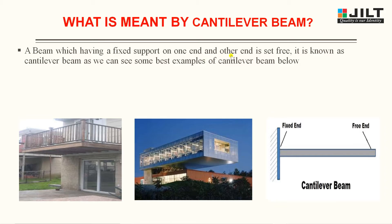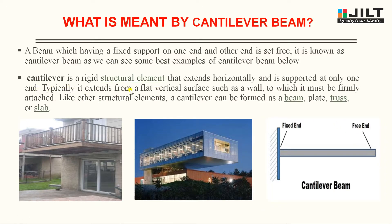A beam having a fixed support on one end and the other end set free is known as a cantilever beam. Some best examples are a balcony or terrace — an open place where one end is fixed and the other end is free. A cantilever is a rigid structural element that extends horizontally and is supported at only one end. Typically it extends from a flat vertical surface such as a wall. Like other structural members, a cantilever can be formed as a beam, plate, truss or slab.